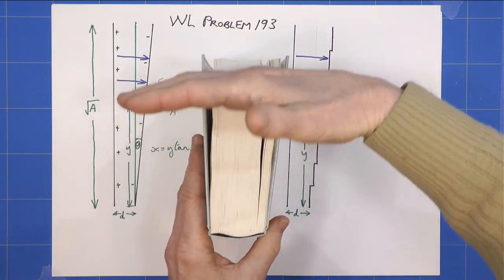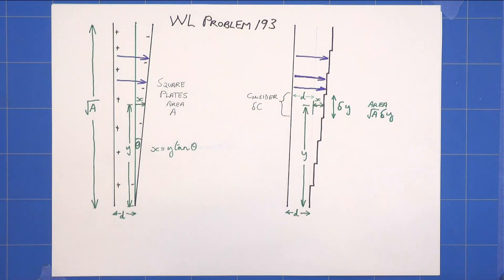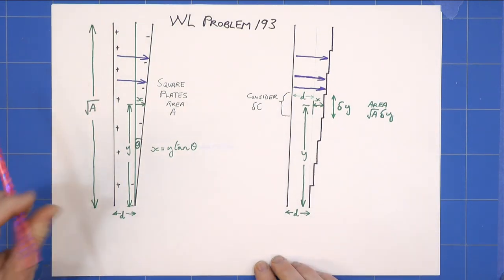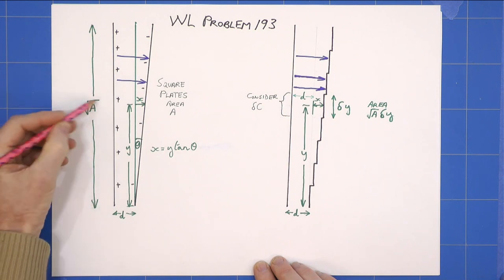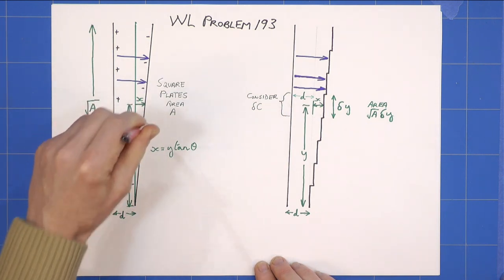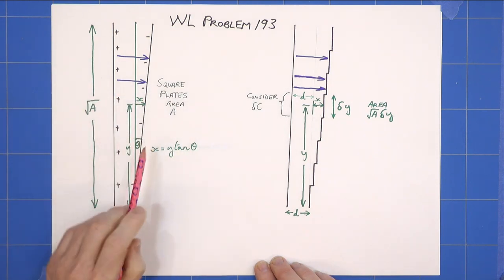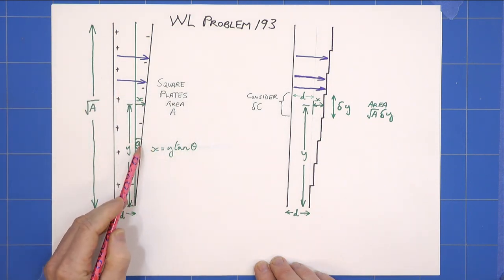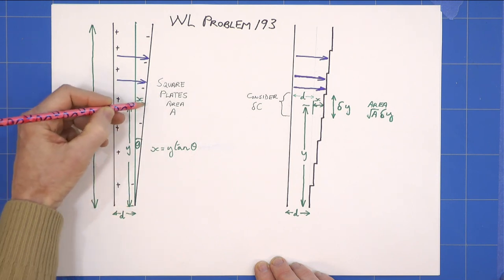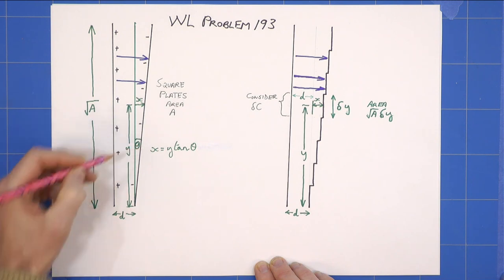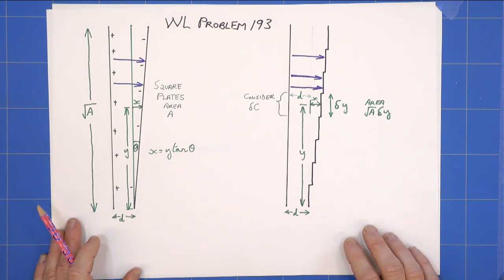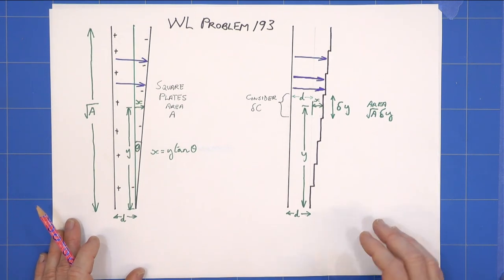So we have set up here: the length is going to be root A, because it's a square plate, and similarly it's root A in that direction. I've defined an angle theta here. We're given that angle theta. I've taken a right angle triangle with Y, X, theta, and so X equals Y tan theta.